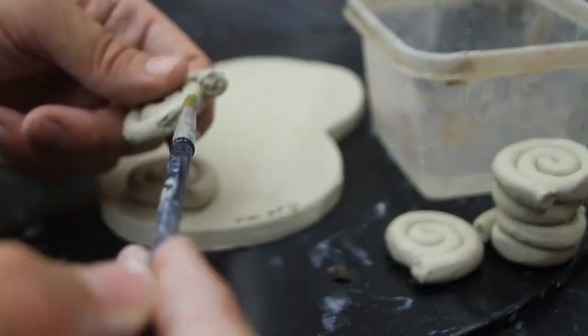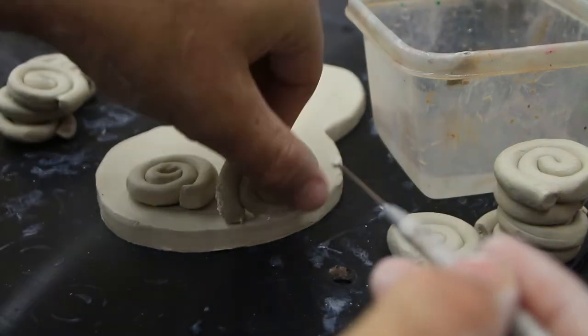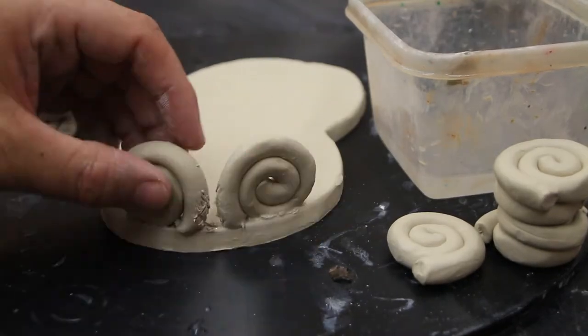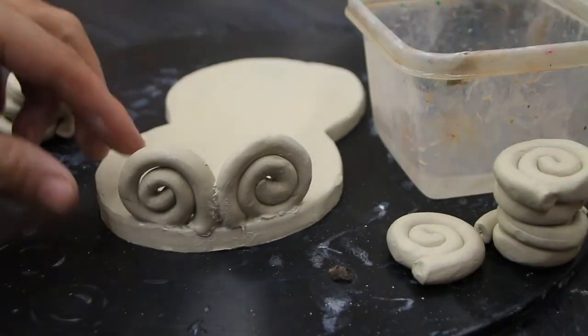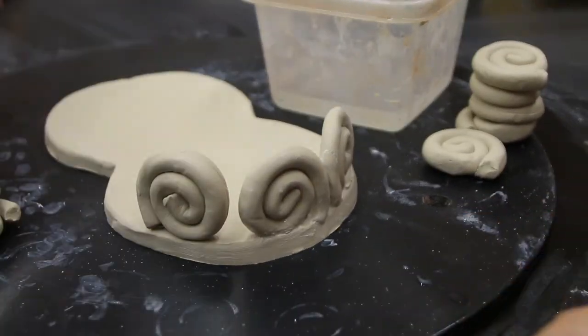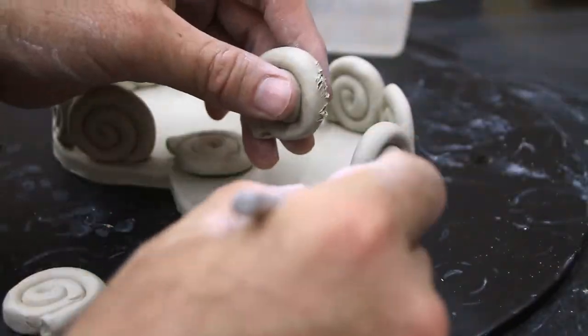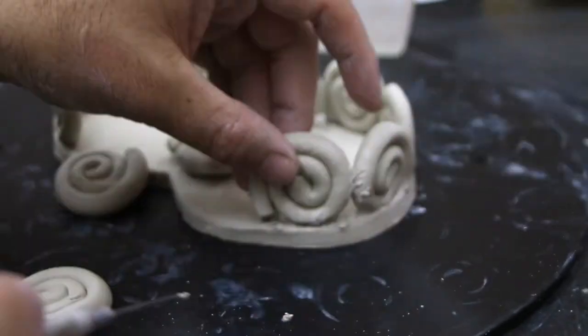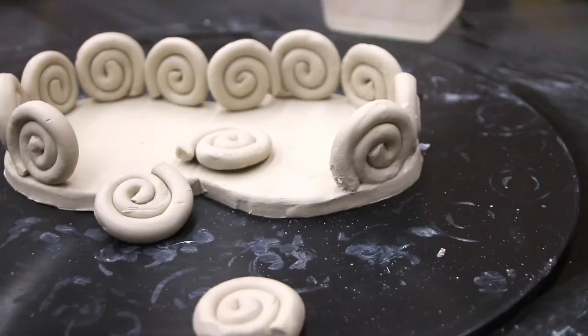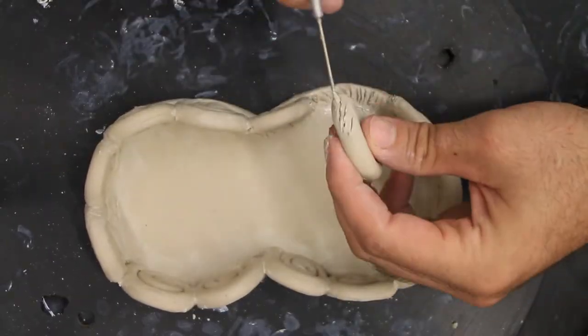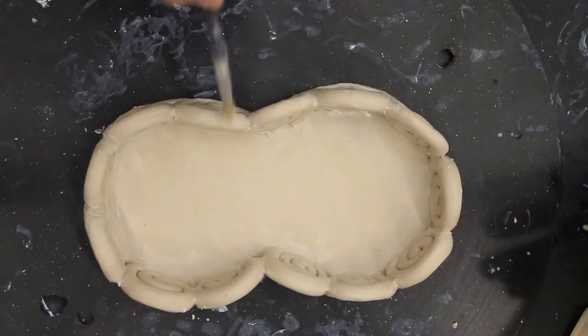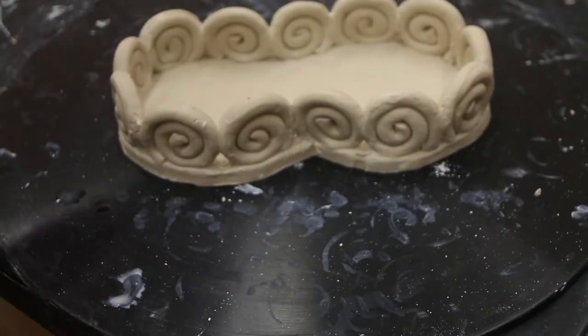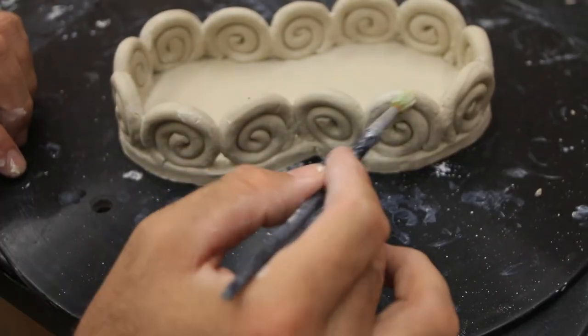Once you get all those coil motifs rolled out, it's time to start attaching them. It's really amazing the different varieties you can get just by changing the layout. I'm gonna go with the front-to-front back-to-back layout. You can see me scoring and slipping here - I'm using my needle tool to score it and then adding water and then scoring it again, that creates a slip. I'm using my paintbrush to get in between the cracks and just smooth all the slip up and get it looking really neat. Taking a little time for your craftsmanship always makes a better piece.